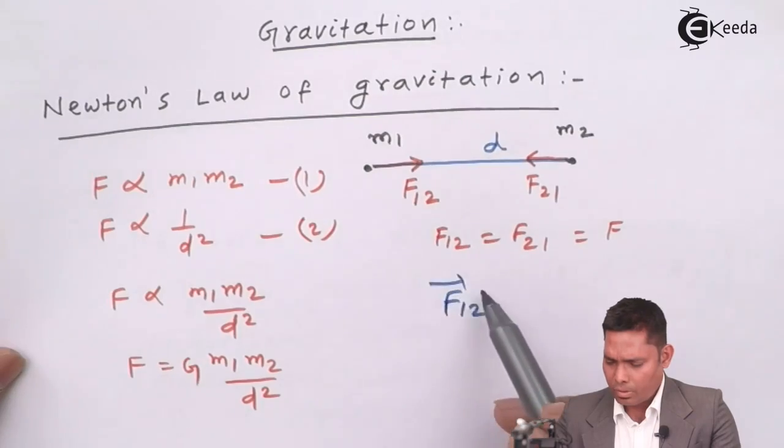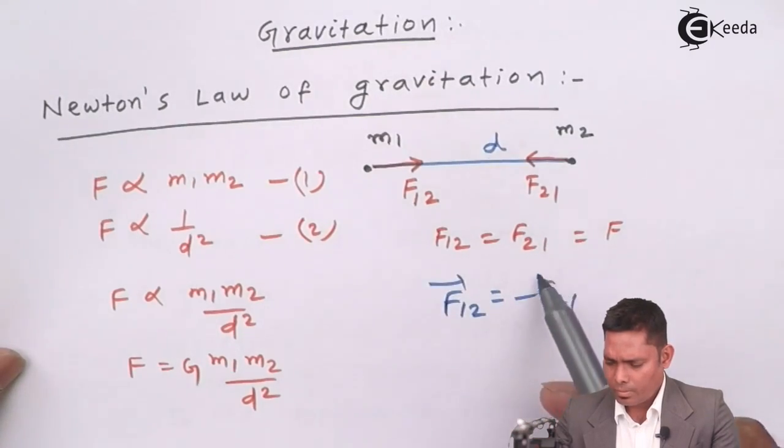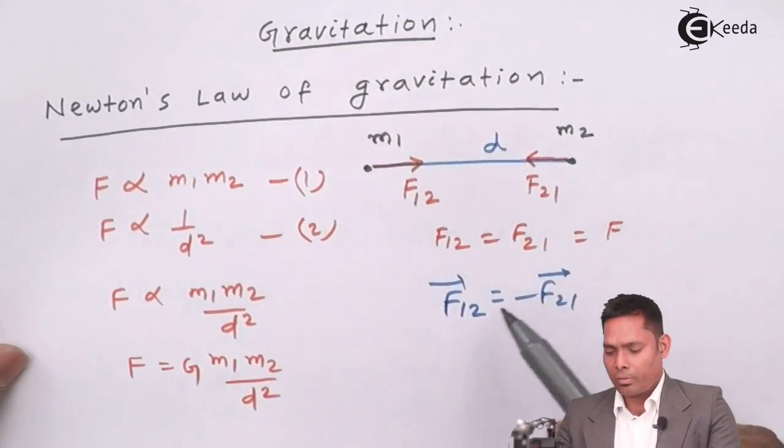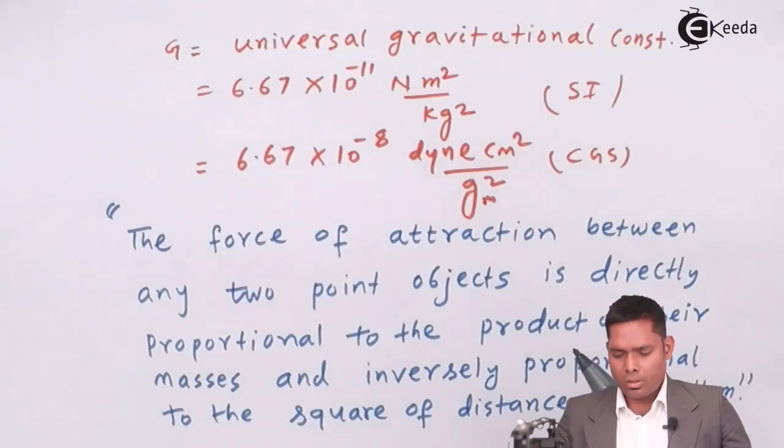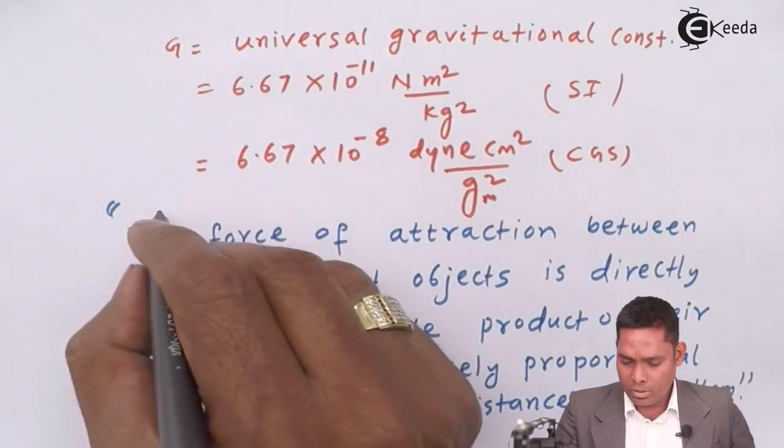So you can directly write that F12 is minus of F21. Obviously they are equal in magnitude but opposite in direction. So this is your Newton's law of gravitation. This is the statement.